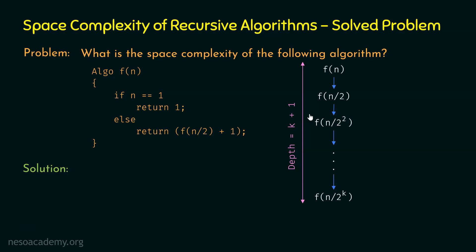Please remember that for every recursion, it is not always true that the number of function calls equals the depth of recursion. For this specific algorithm, the depth of recursion equals the number of function calls because the flow of function calls is linear — from every function call there is only one subsequent function call. For these types of recursive algorithms where the flow is linear, the depth equals the number of function calls, which is k+1 here.